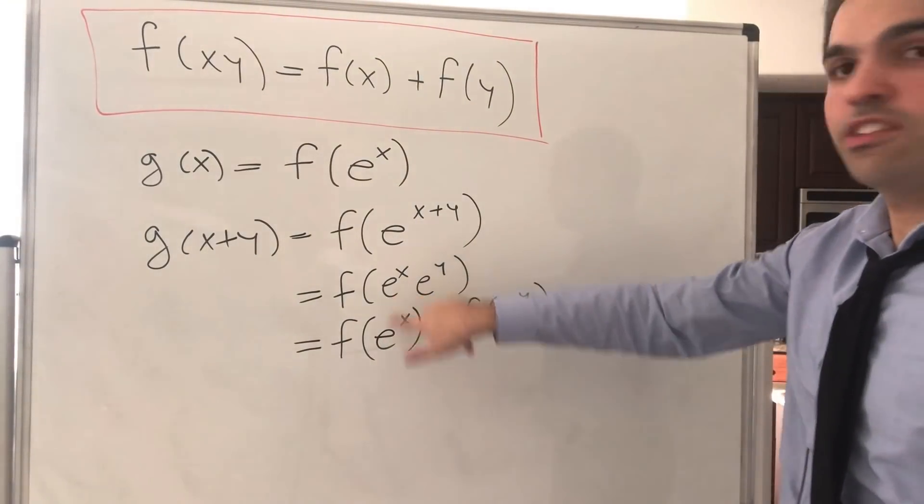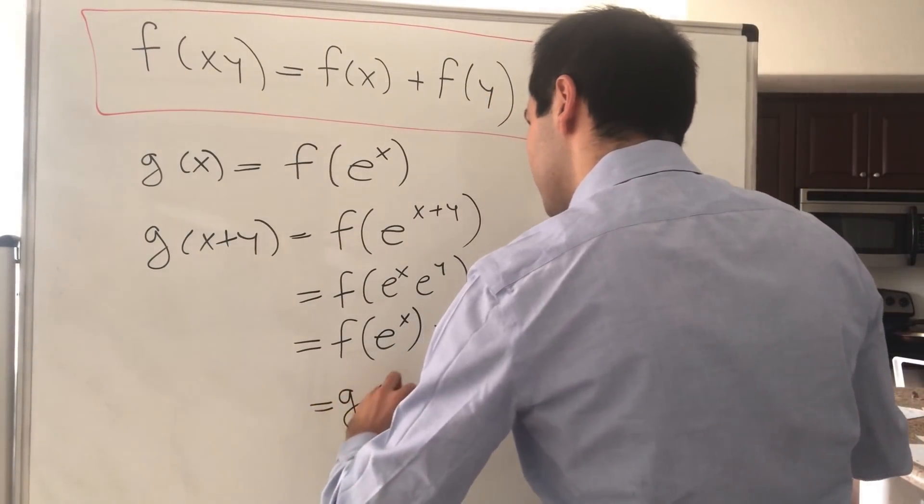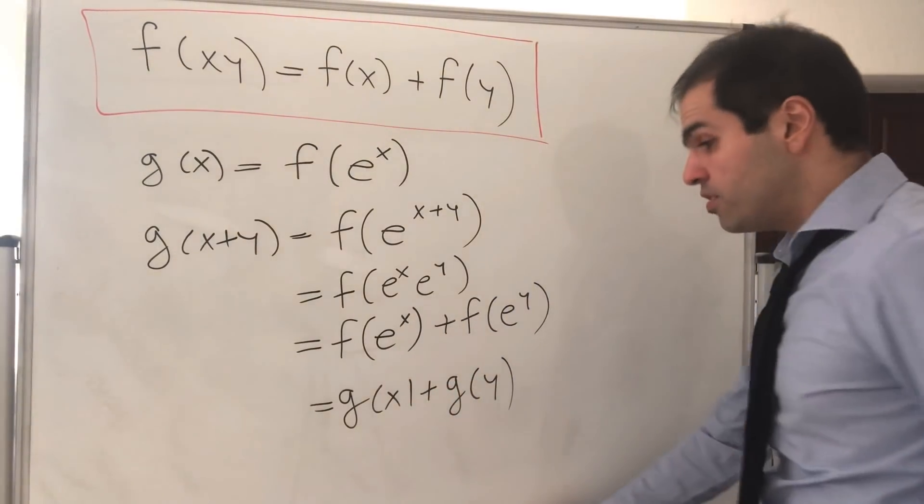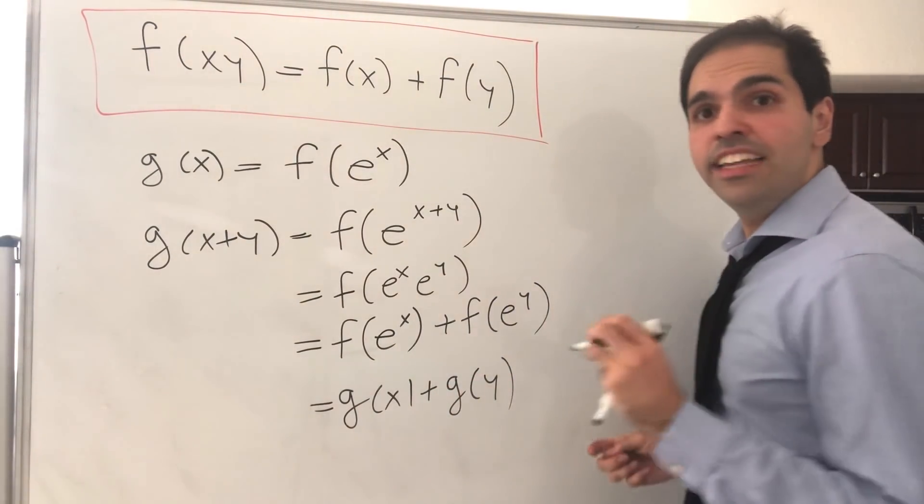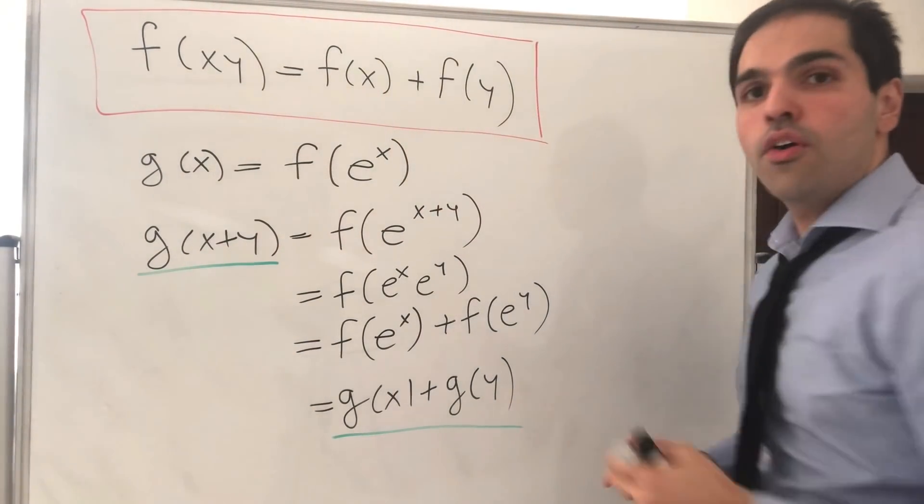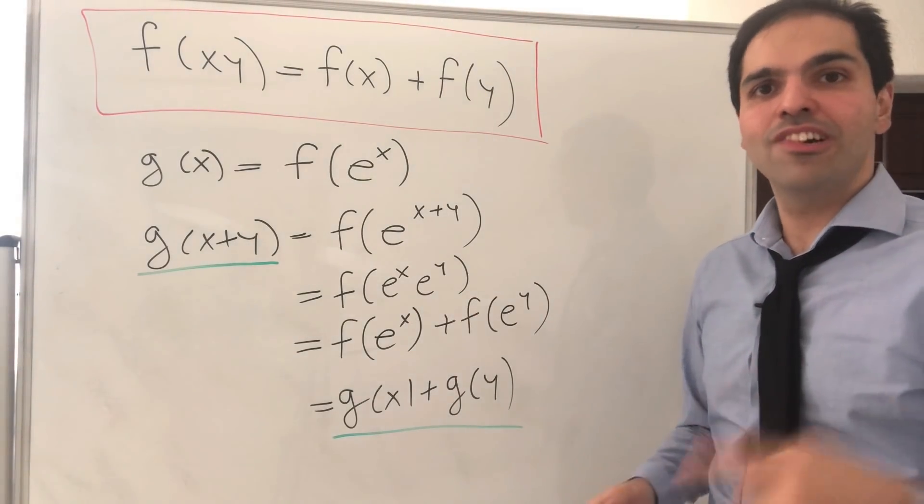Again, f transforms products into addition, and that then just becomes g of x plus g of y. And so therefore, g satisfies a very famous identity which is called Cauchy's functional identity, of which I've already made a video on. You can look at it in the description.